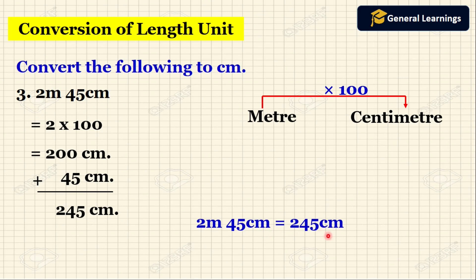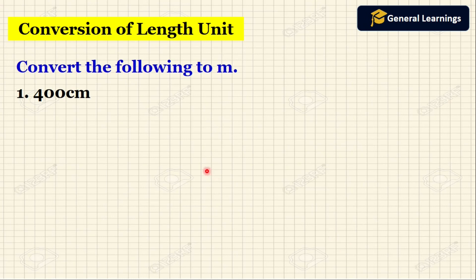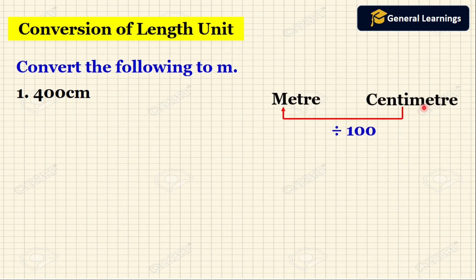I hope you understand how to convert meters to centimeters. Now we will see how to convert centimeters to meters. Here they have given 400 centimeters. To convert centimeters to meters we need to divide by 100. So we divide 400 by 100 and we get 4 meters.